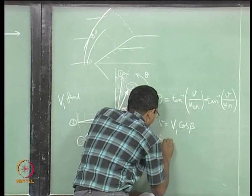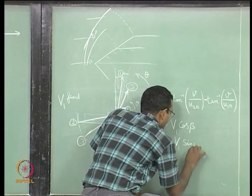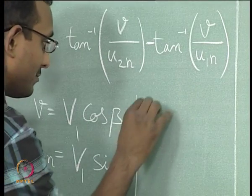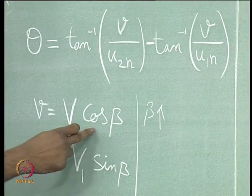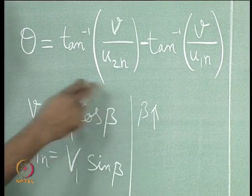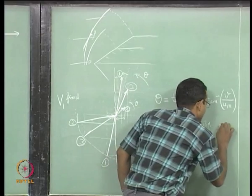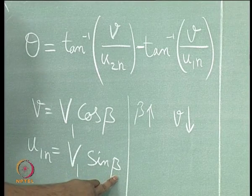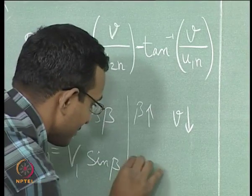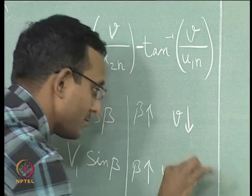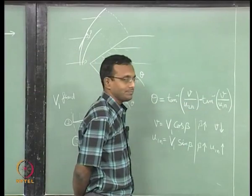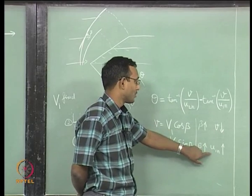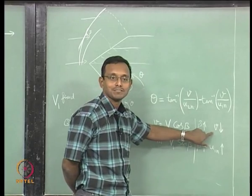If beta increases (between 0 and 90 degrees), cos beta decreases so V decreases, while sin beta increases so U1 normal increases. Therefore V by U1 normal decreases when beta increases (denominator increasing, numerator decreasing). Since tan_inverse is a monotonic function, if V/U1_normal decreases, tan_inverse of that quantity decreases, which means the second term decreases and theta tends to increase.